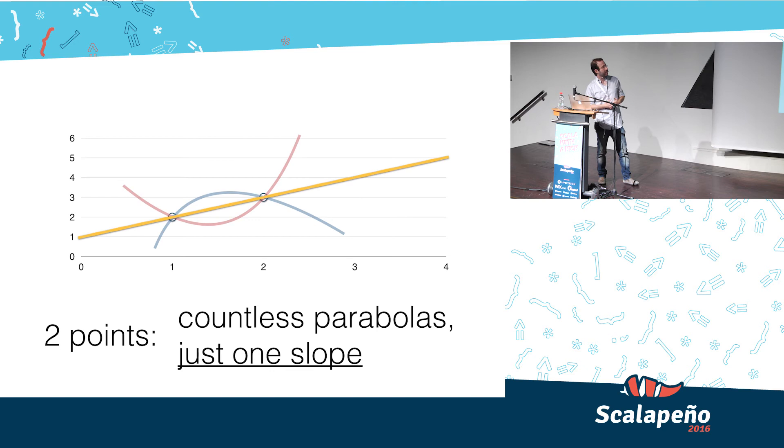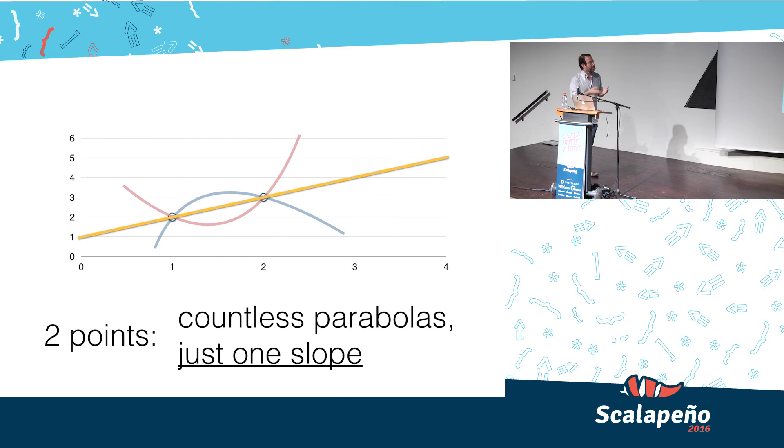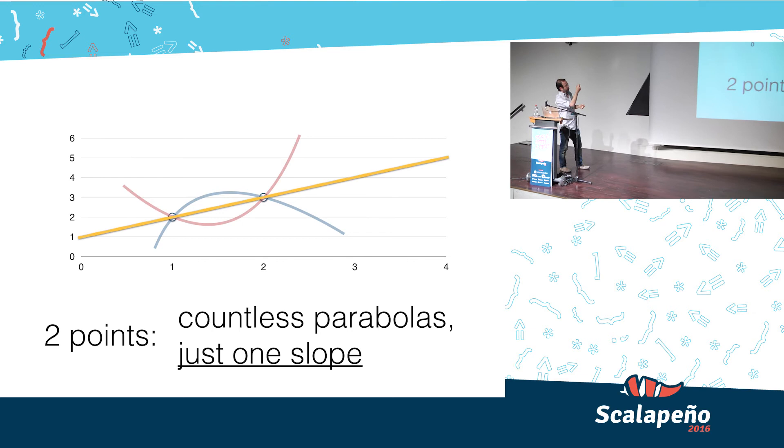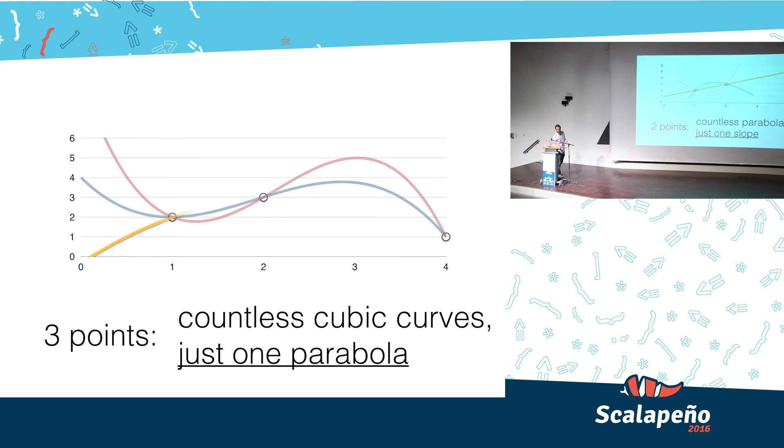Let's build an intuition of how that can be done. For two points, there are infinitely many curves that pass through those points, but only one straight line.